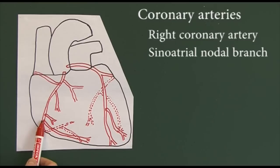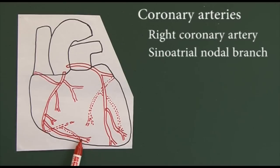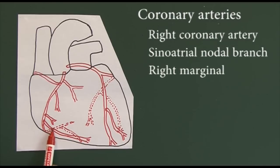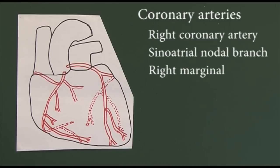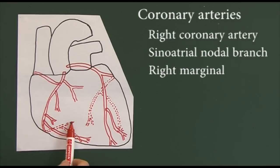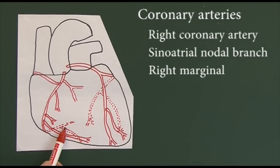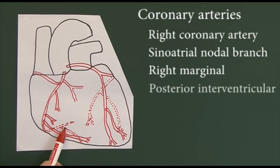Near the bottom of the anterior portion of the right coronary artery, there's a branch called the marginal branch of the right coronary artery. The right coronary artery then goes down, underneath, and round the back of the heart, where it continues on the posterior side. There's also a major branch coming off it called the posterior interventricular branch of the right coronary artery.